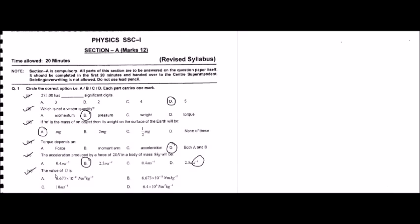Question number six: what is the value of G? Capital G is called the gravitational constant, and its value is 6.673 × 10⁻¹¹ N·m²/kg². Checking the options: option A is 6.673 × 10⁻¹¹ N·m²/kg², which is the correct option. Option B has 10⁻¹⁰, so the exponent is wrong. Options C and D are also not possible. So option A is the correct answer.